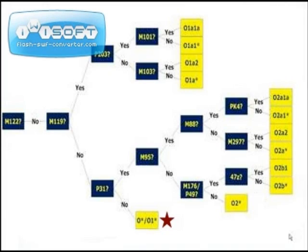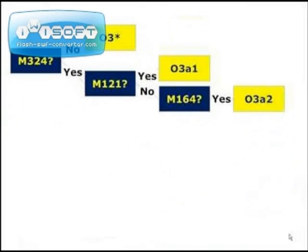Now that we have examined the series of SNPs that define each subclade within O1 and O2, let's follow the path if you are positive for M122 and are therefore part of subclade O3. After verifying that you have SNP M122, check your result for M324. If you don't have this mutation, you are in paragroup O3 star. A positive result for M121 places you within O3A1.